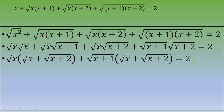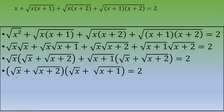Once again there is a common factor: (√x + √(x+2)). So we factor it out and end up with (√x + √(x+2))·(√x + √(x+1)) = 2.